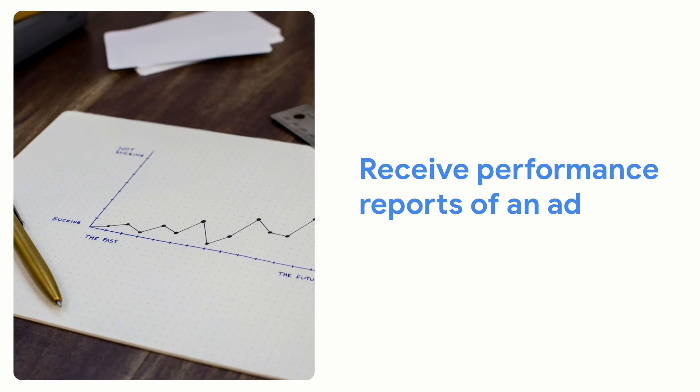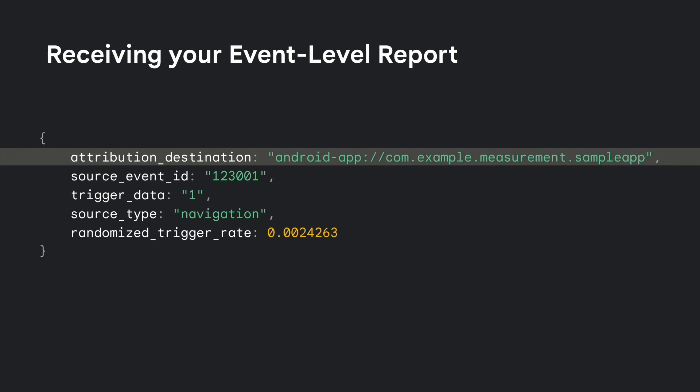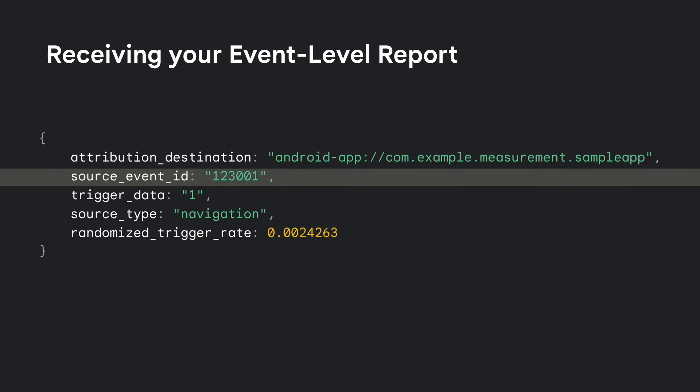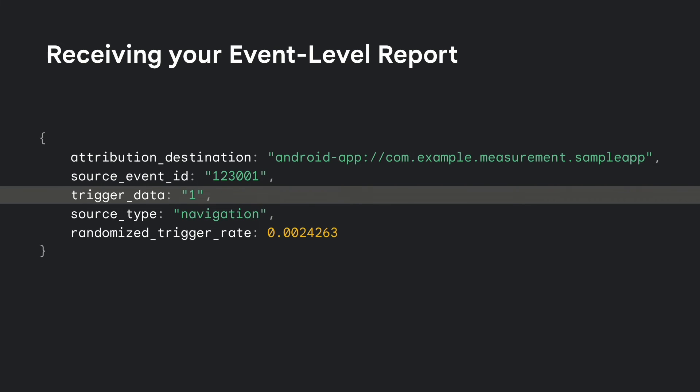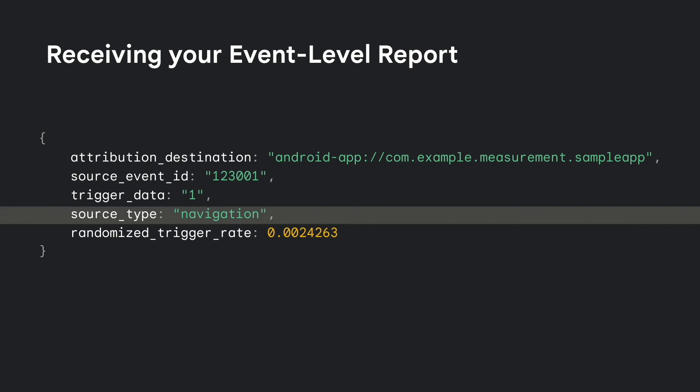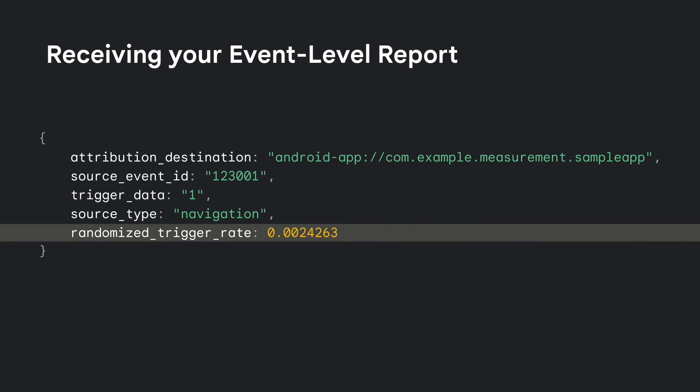The event level report contains information about specific conversions that happened on the device. Because these reports refer to specific conversions, the information in them is limited to protect privacy. You'll find information such as the attribution destination, which refers to the app in which your event happened; the source NID, which refers to the ad that led to this report; the trigger data, which is low fidelity data for conversions; the source type, which refers to whether the interaction is a click or a view — in this case, navigation refers to a view; and the randomized trigger rate, which is a parameter for adding noise to event reports.